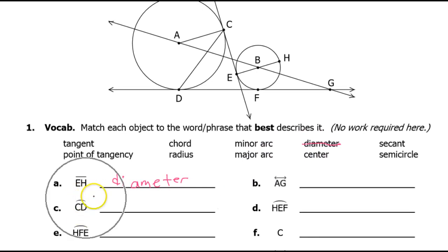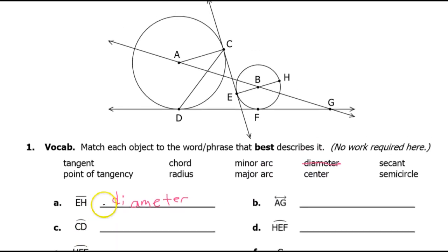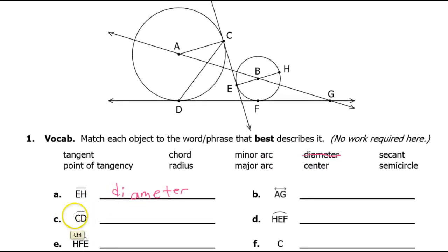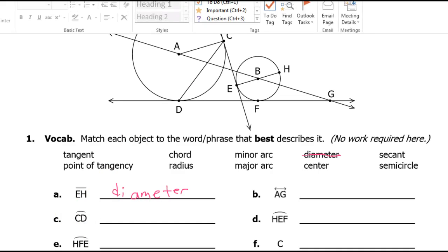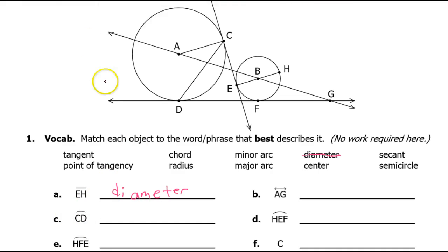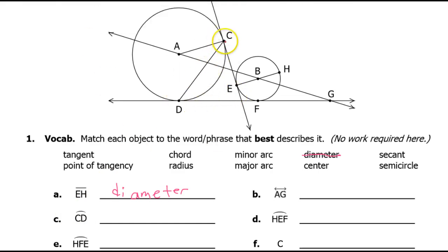Arc CD. If they use two letters, that automatically means we're talking about the short way around. So arc CD goes from C to D the short way. That is a minor arc.